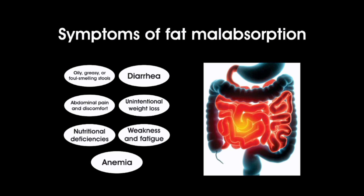Unintentional weight loss — the inability to absorb fat and other nutrients can cause weight loss. Nutritional deficiencies: fat-soluble vitamins such as vitamin A, D, E, and K may not be properly absorbed, leading to deficiencies and related symptoms. Weakness and fatigue: a lack of essential nutrients can lead to general weakness and fatigue. Anemia: malabsorption of nutrients can also lead to anemia.